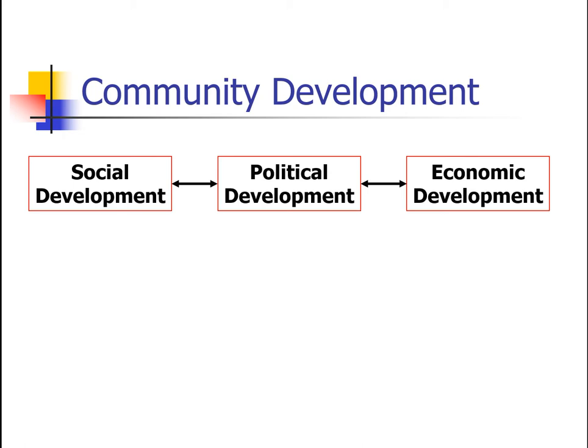Encouraging local industry, using local resources, and using initiative and expertise to develop new locally-based industry. For example, that's what they've done with the oil industry in Newfoundland, although I'm not so sure that's been that positive for community development. Economic development also could be tourism, cooperatives, community banks, and credit unions. There are even alternative community-based currencies — developing different currency systems besides money, or think of the barter system as a form of community-based currency. I personally am very fond of the barter system.